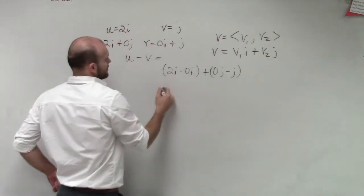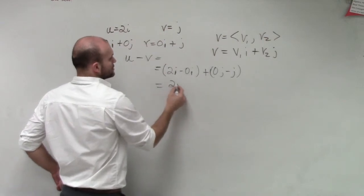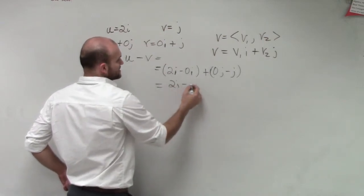So therefore, this now equals 2i minus j.